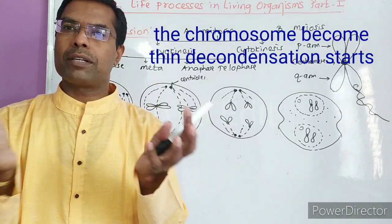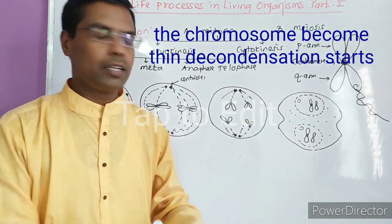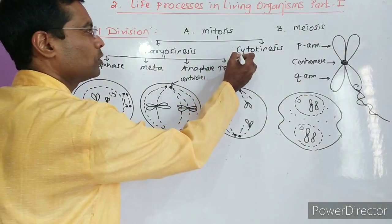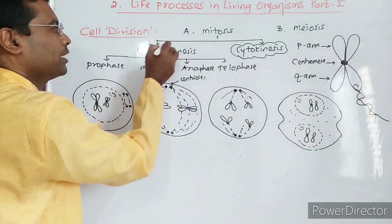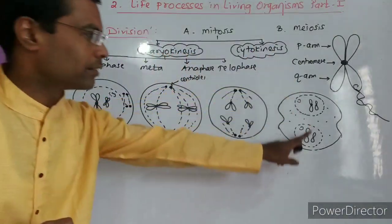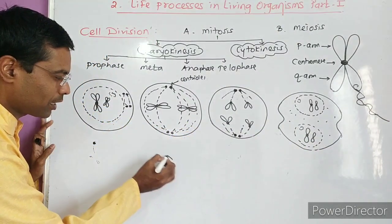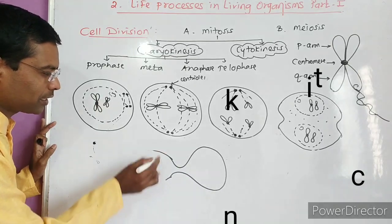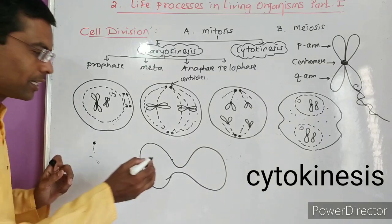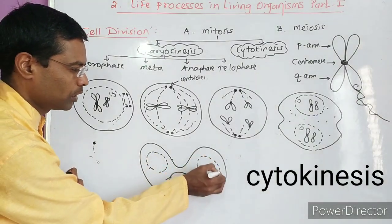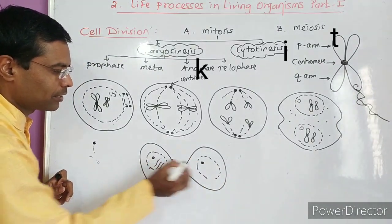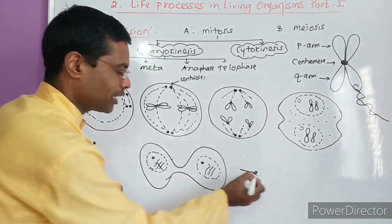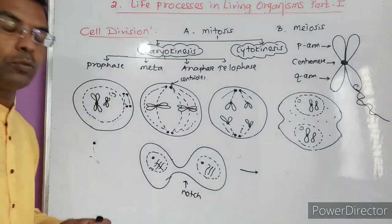Telophase is reverse of prophase. Whatever happened in prophase, the opposite happens in telophase. Nuclear membrane and nucleolus start to reappear. The chromosomes become thin. DNA fibers start to separate from chromosomes. The groove forms at that place in telophase. And after that, another step proceeds - cytokinesis. Because now karyokinesis is complete.